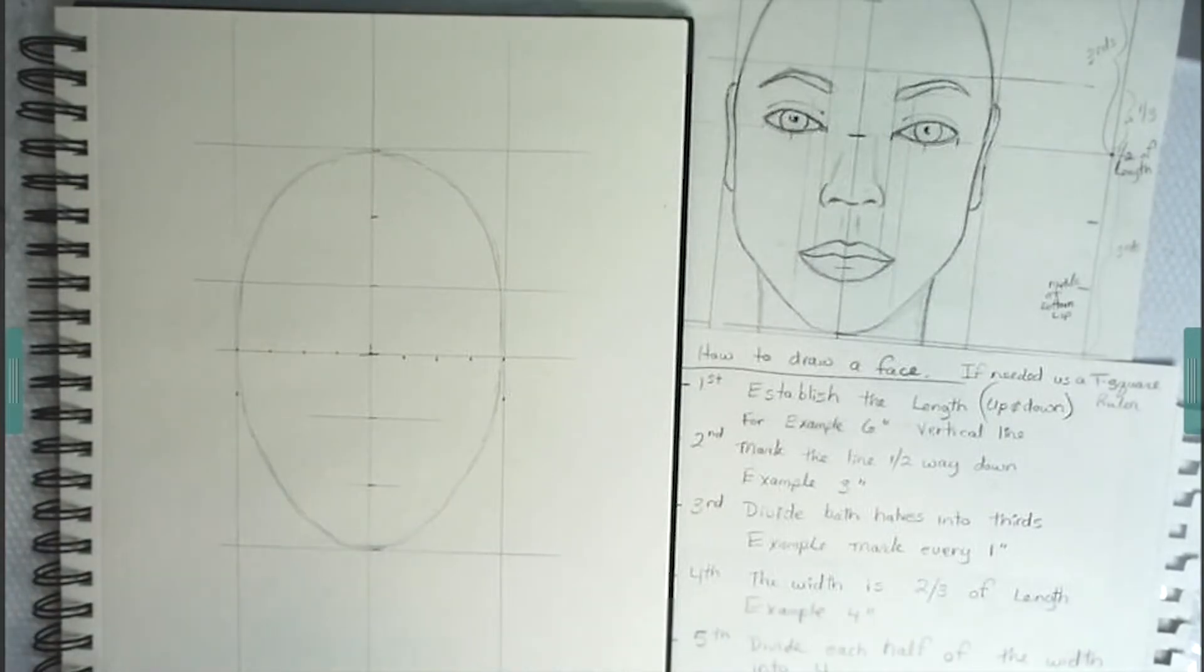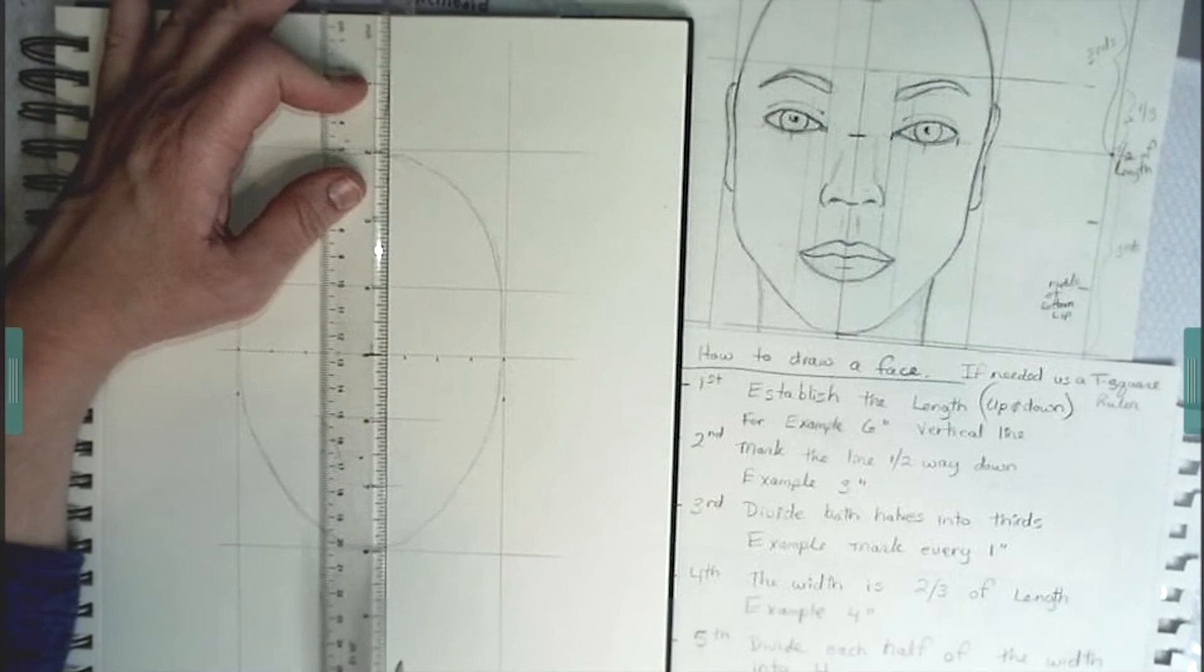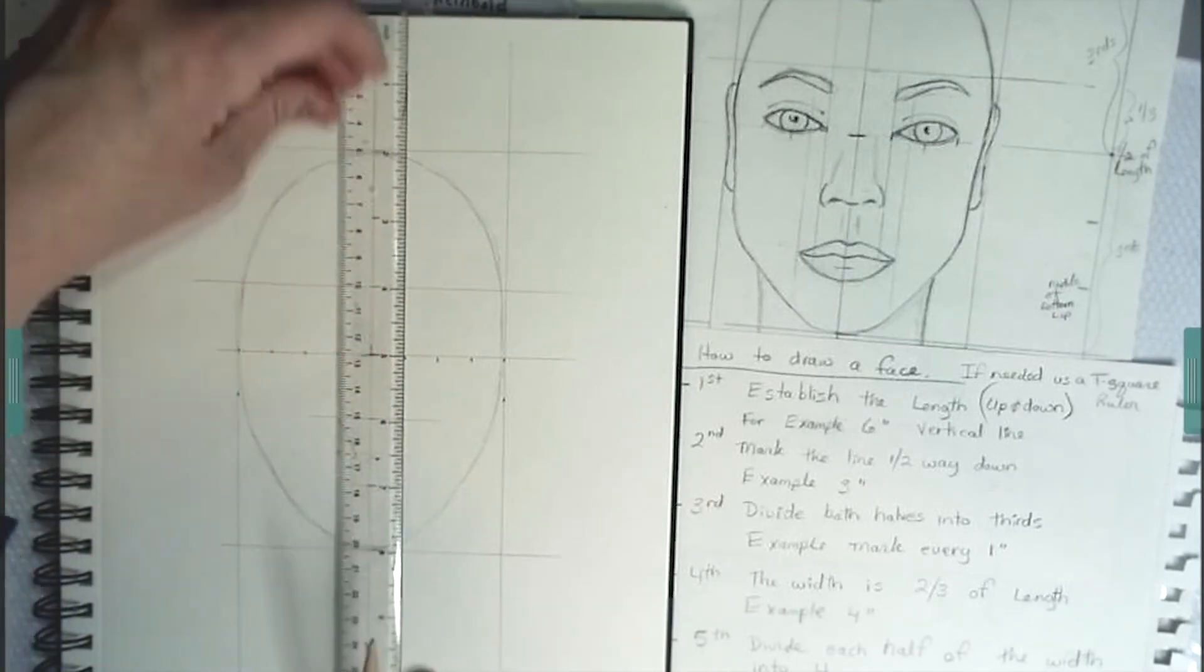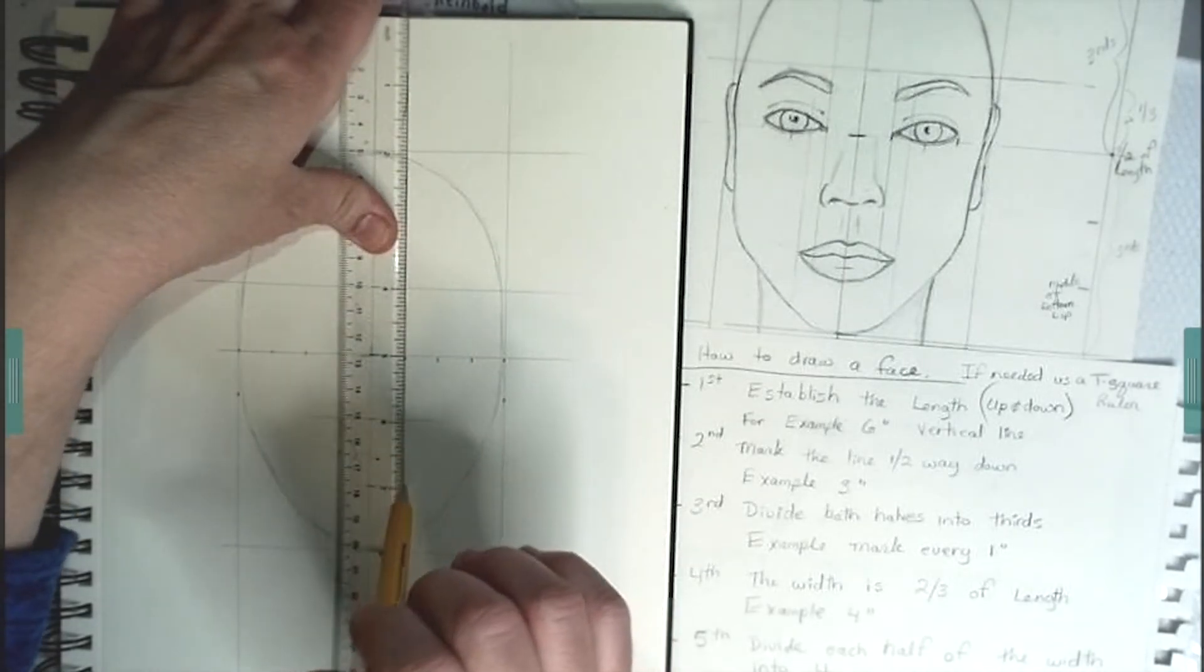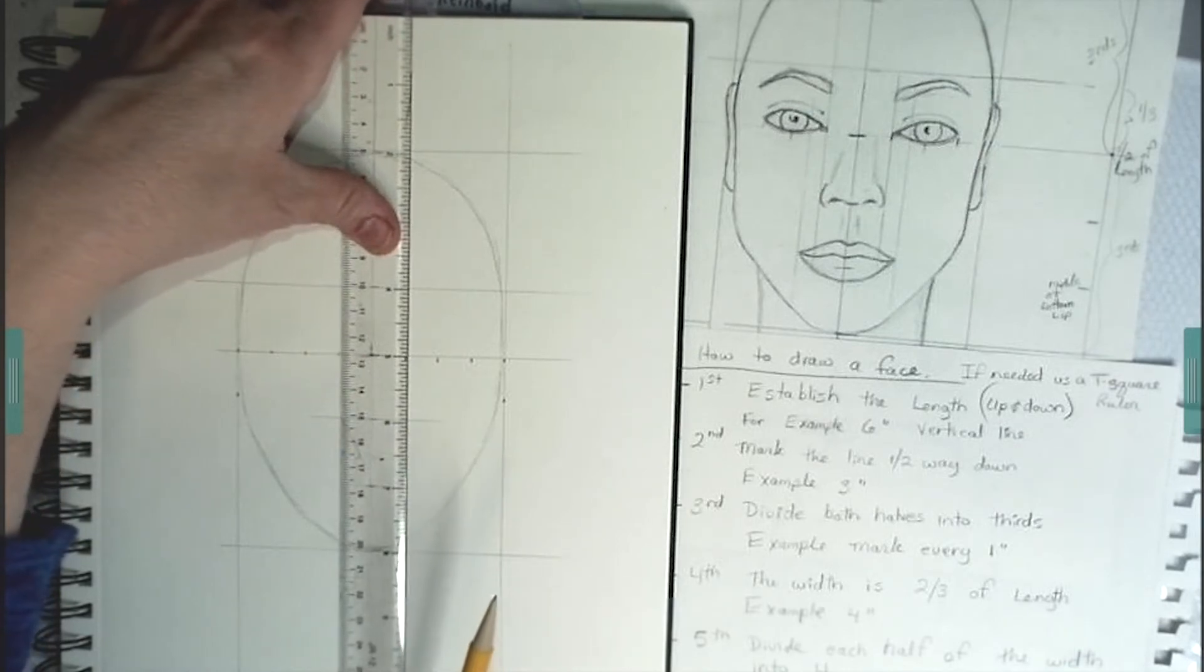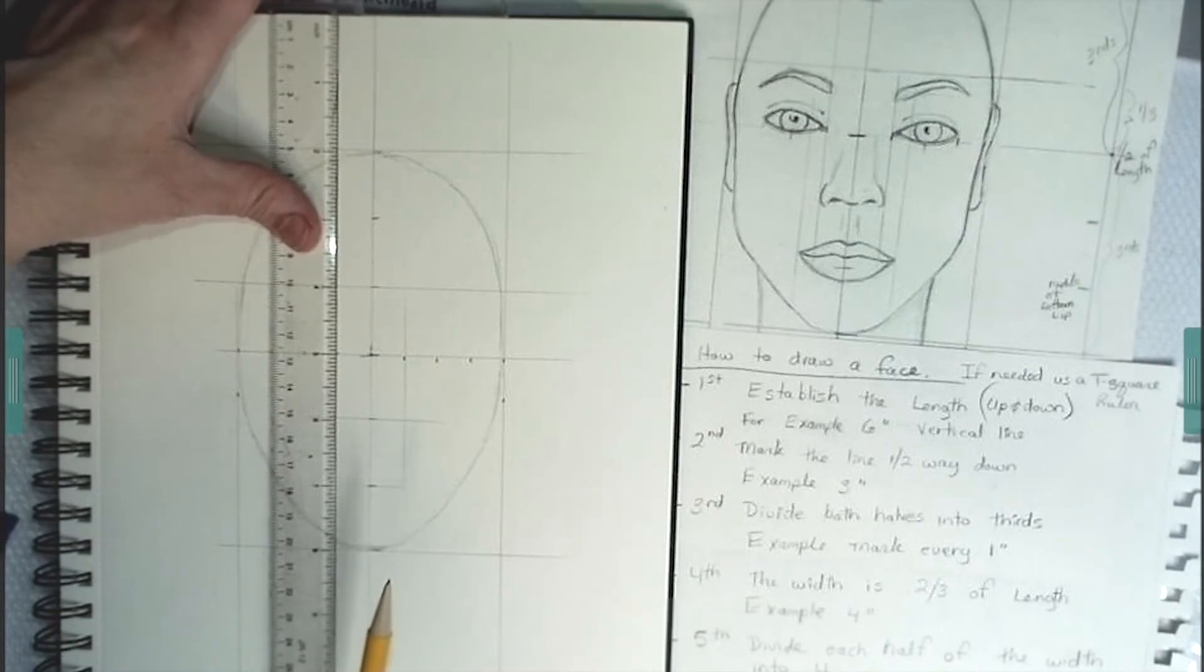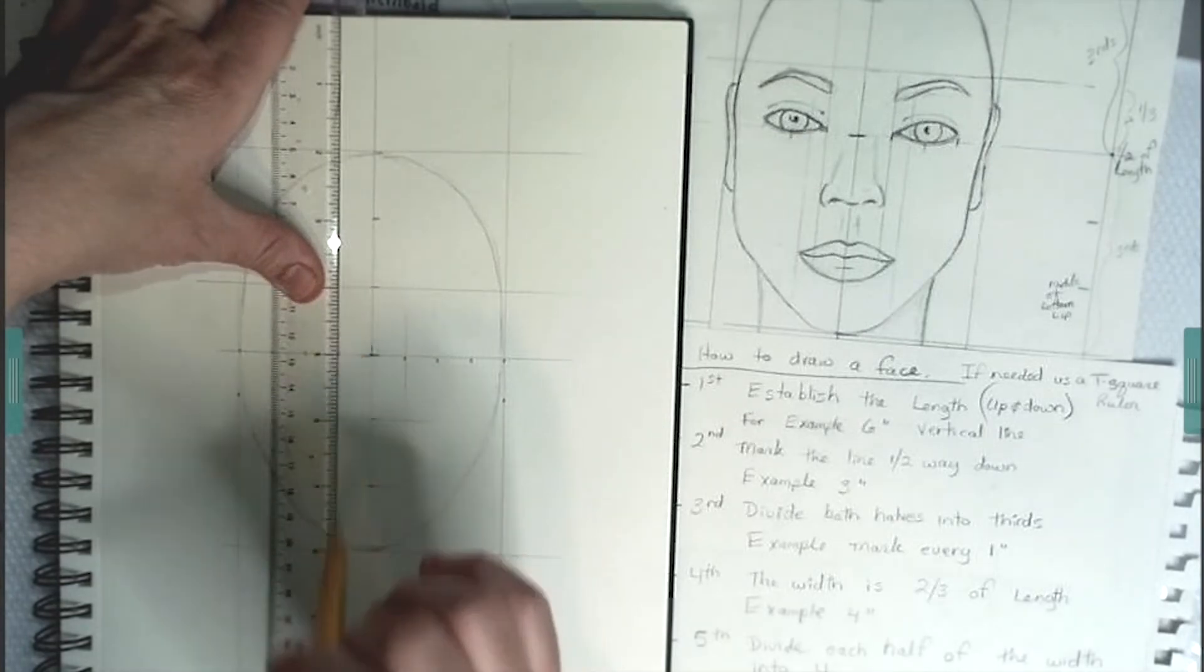And then you're going to make some vertical lines on the first quarter on the right side and then the left side of the face. And those are really all the lines that you need in order to start drawing the face.